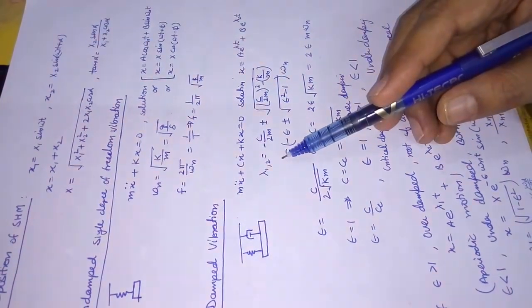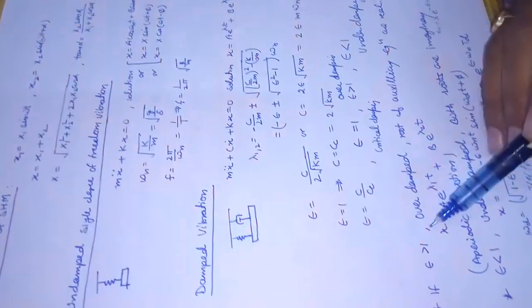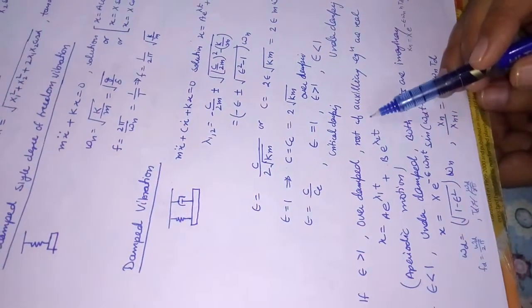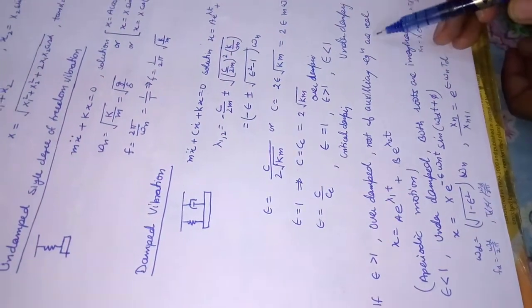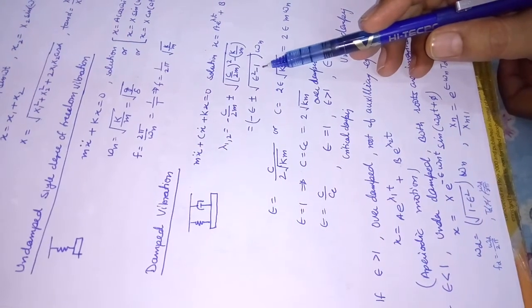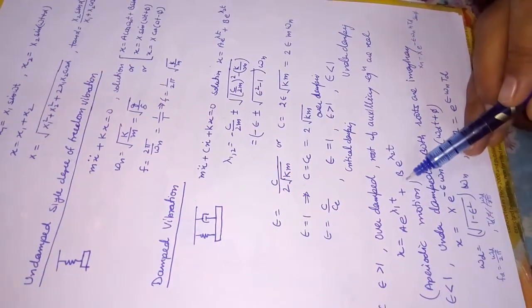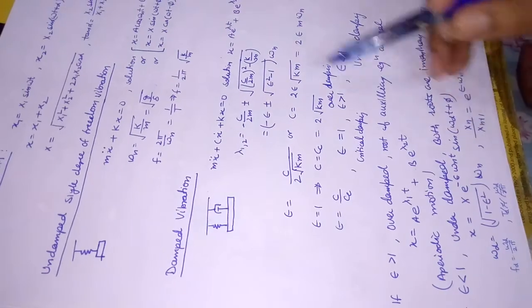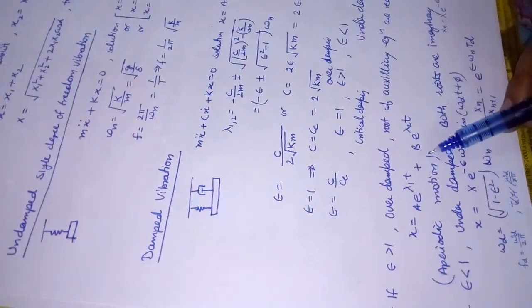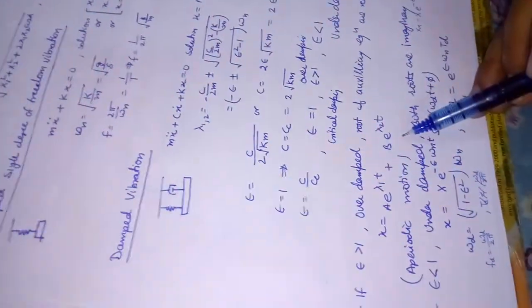The first case is when ε > 1, known as over-damped vibration. The roots of the auxiliary equation are real because ε² > 1. The solution is x = ae^(λ₁t) + be^(λ₂t). The motion is aperiodic — the vibration reduces and ultimately dies down after a period of time.